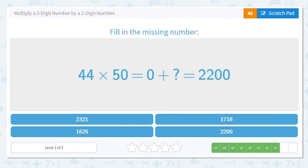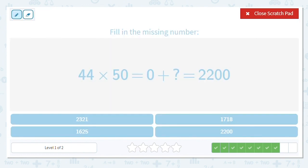Next one, 44 times 50 equals 0 plus what? We need to find that second partial product. So we have 44 times 50. We know our first partial product is 0 because in the ones place, 0 times 4 and 0 times 4 are both 0. So we're done with that ones place, so we put a 0 here to hold it.